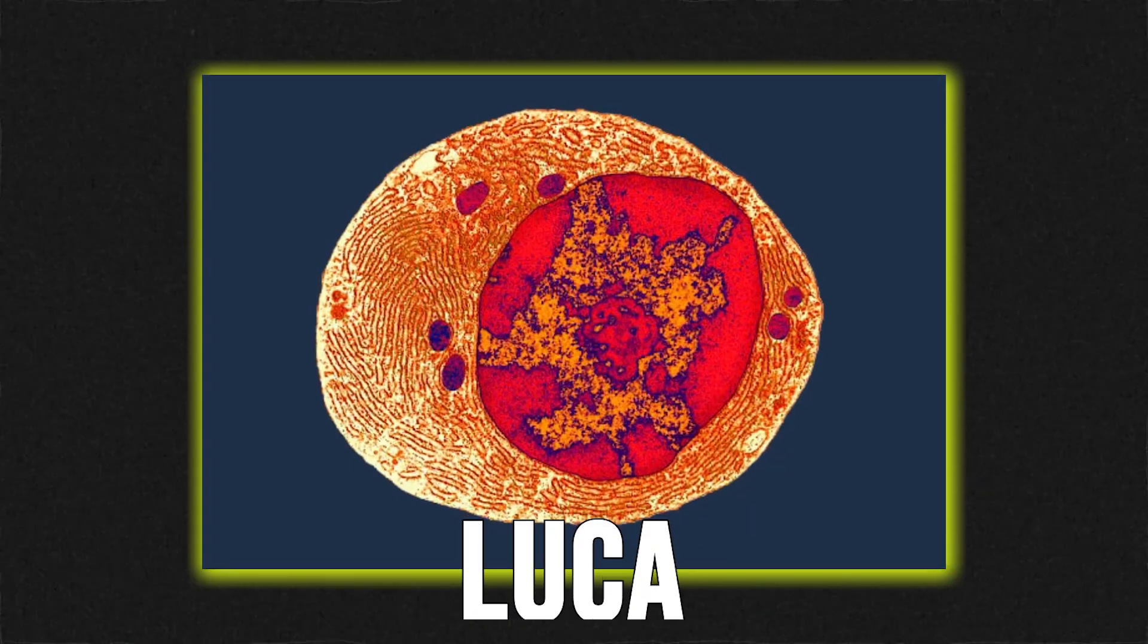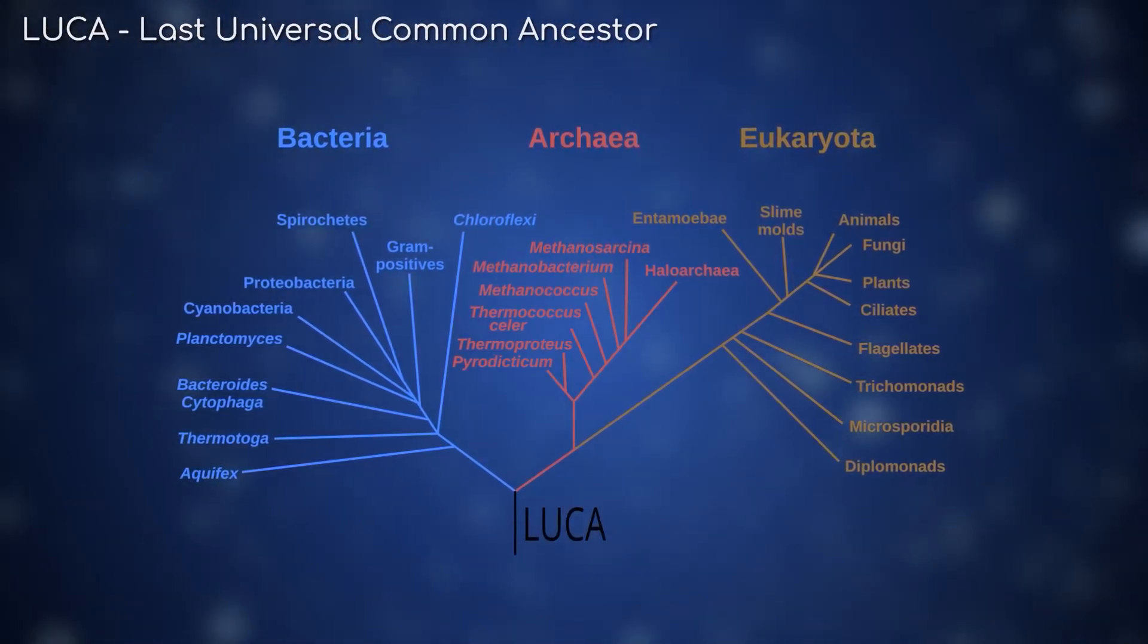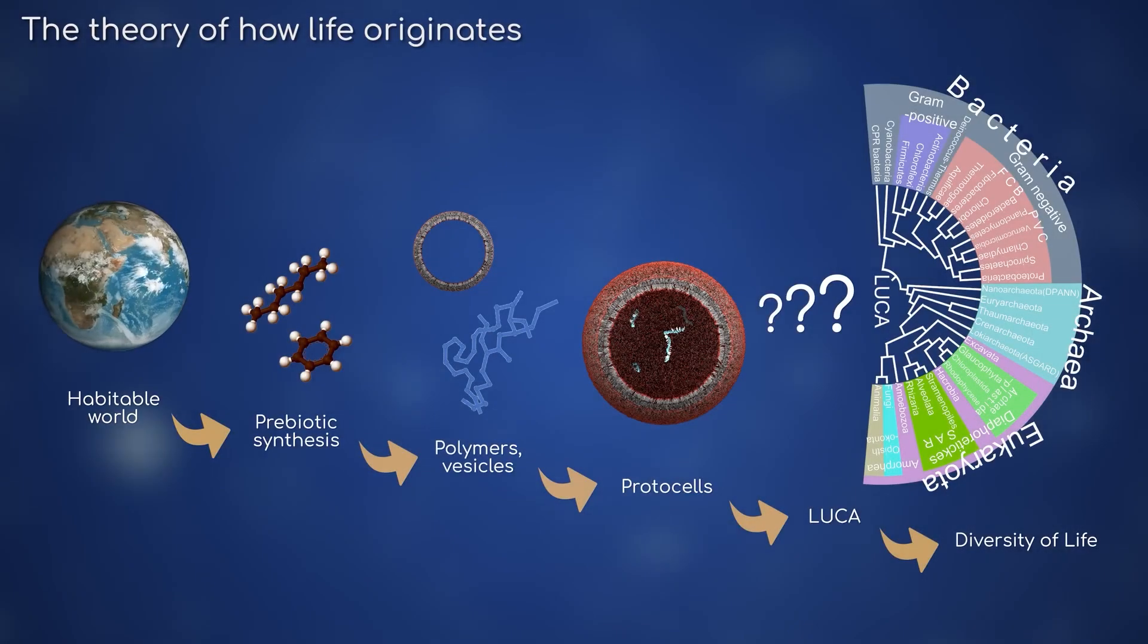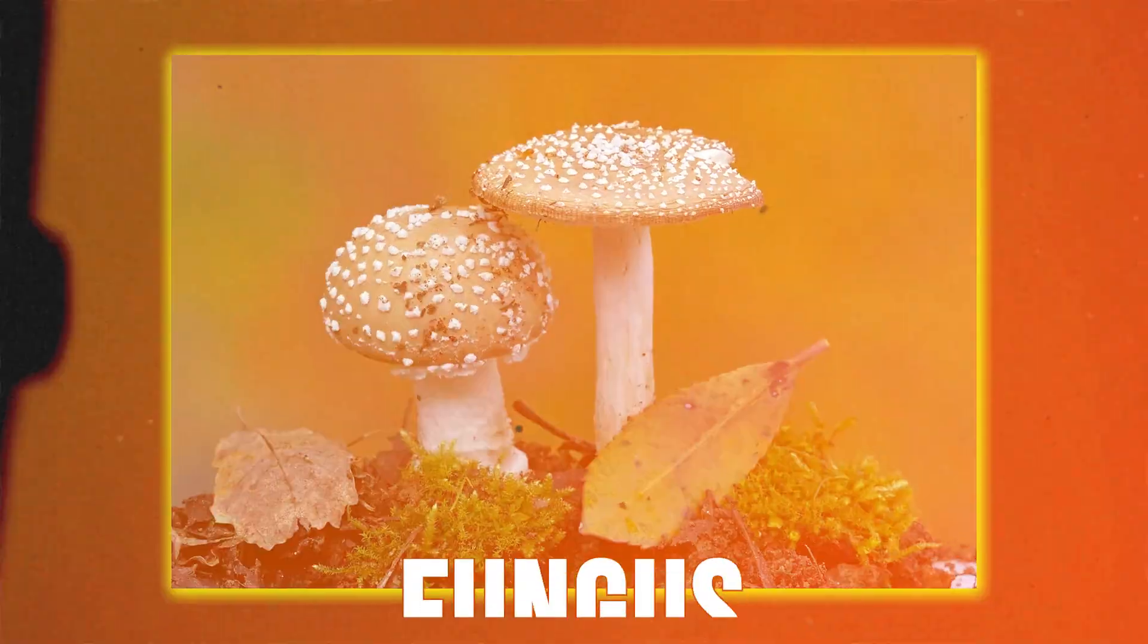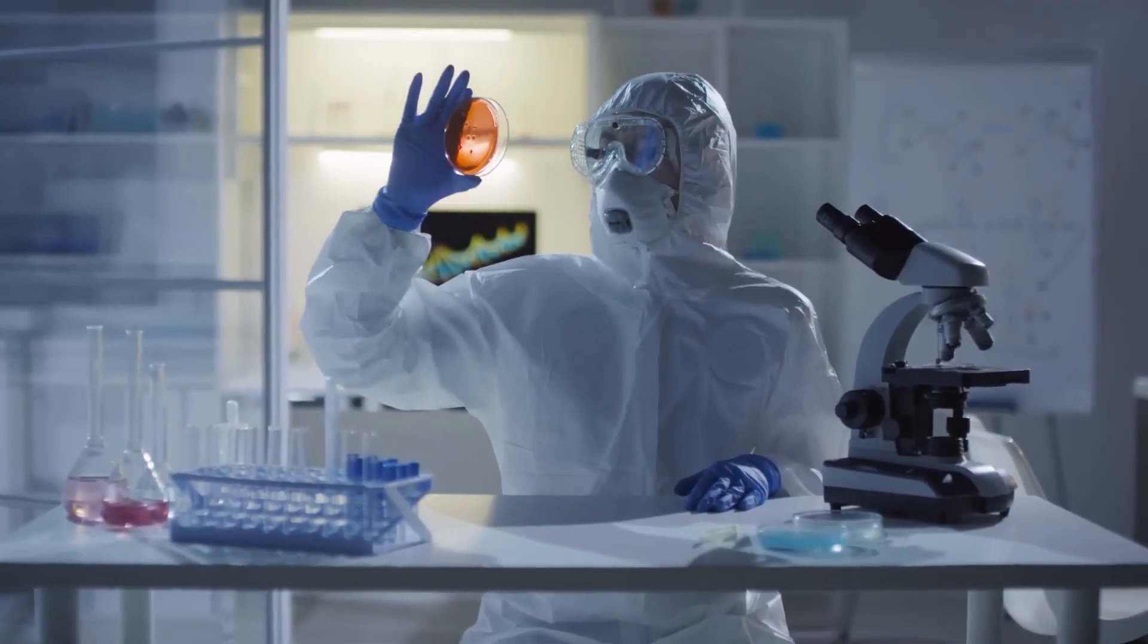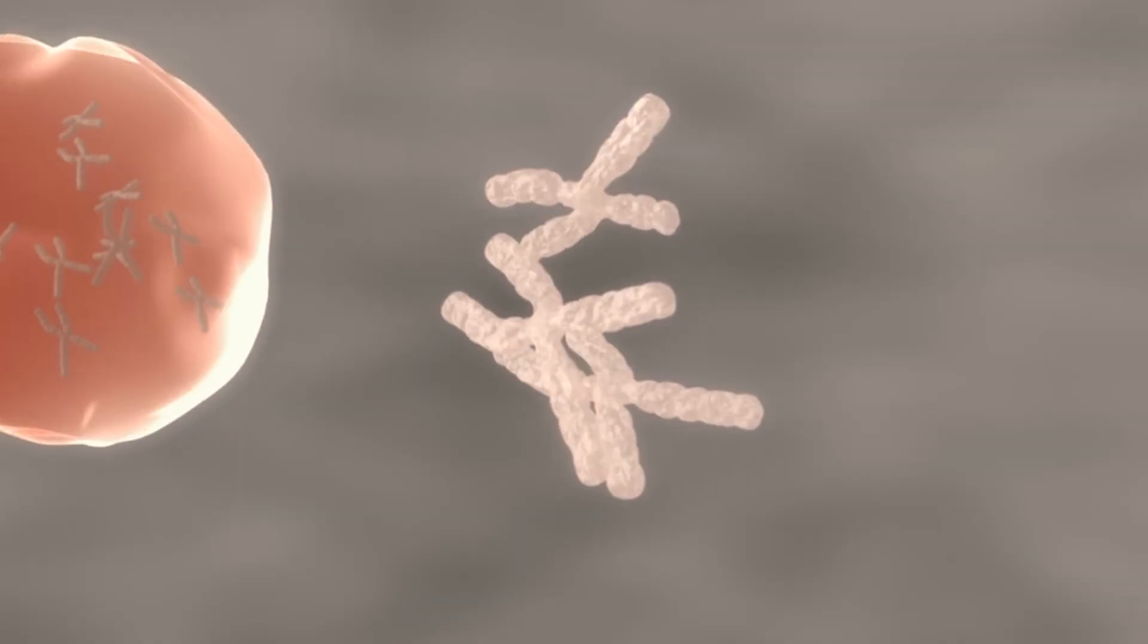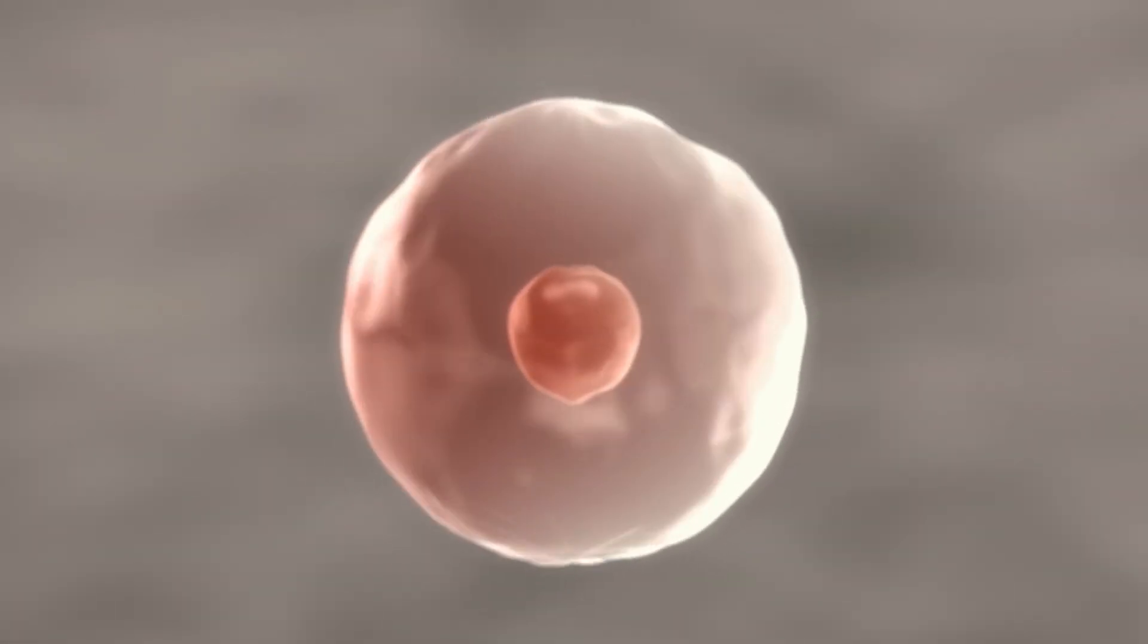Scientists call it LUCA, the last universal common ancestor. It wasn't the first living thing. It was simply the one that left a legacy. Everything alive today, every animal, plant, fungus, microbe, shares something with LUCA. It's our genetic atom, the root of the tree. The quiet beginning before evolution exploded outward.